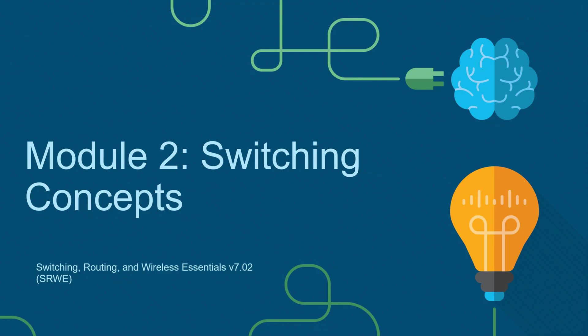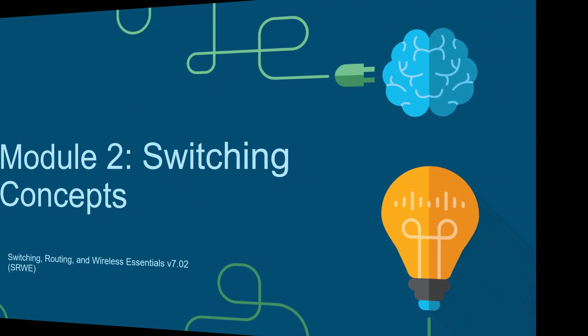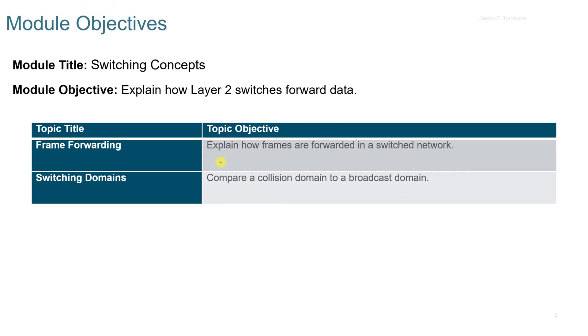This video accompanies the Cisco Netacad Switching, Routing, and Wireless Essentials course. It covers Module 2, Switching Concepts. We're going to cover two objectives: explain how frames are forwarded in a switch network, and compare a collision domain to a broadcast domain.